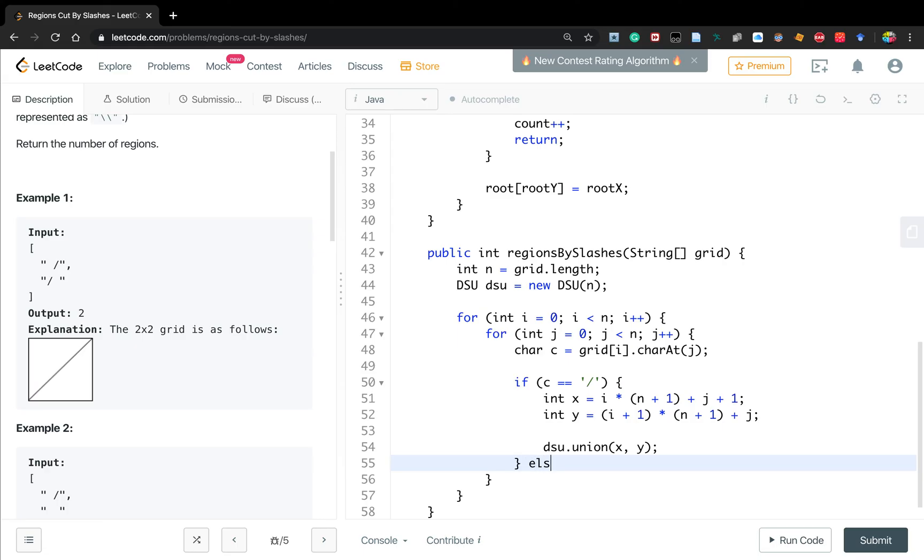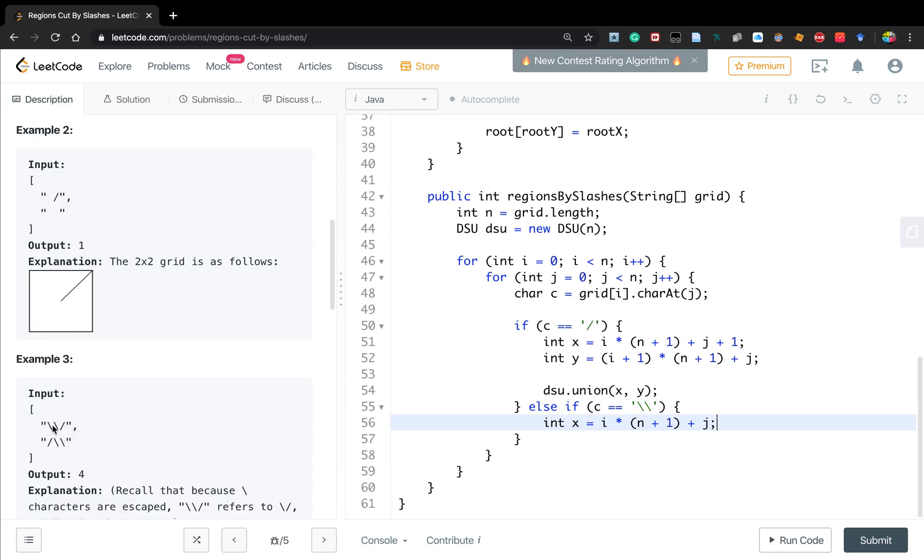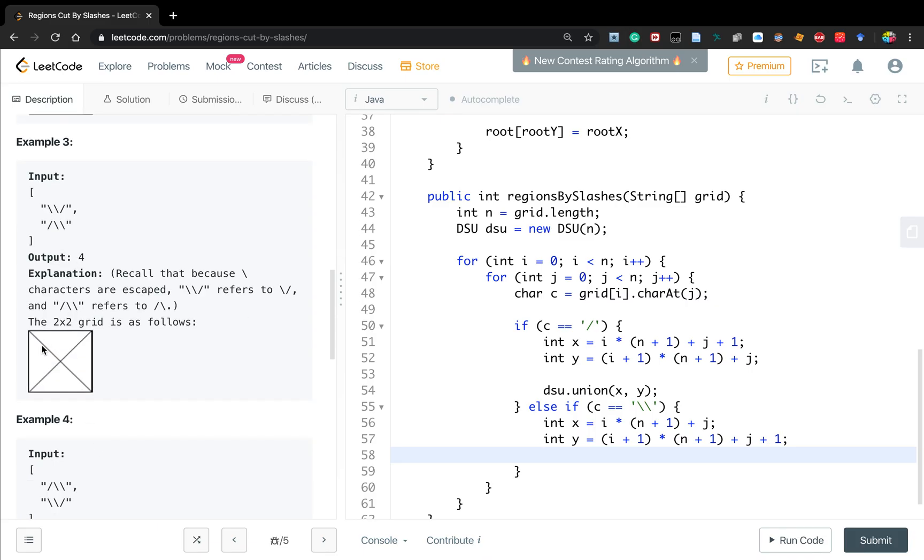Another thing: if c equal to the backslash, int x will equal to i times n plus one plus j. Because we have two backslashes, when we check here we meet the first backslash and we need to do the check. So the next line will be i plus one times n plus one plus j plus one because it's the next row, next column. The same thing: dsu union x, y.